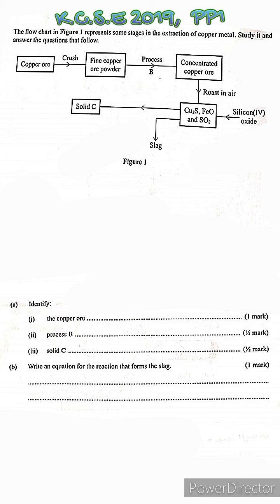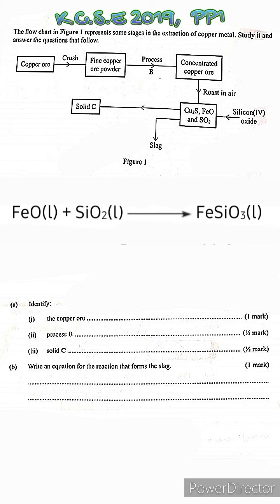Next, what happens to the iron(II) oxide? Iron(II) oxide is separated with the use of silica — silicon dioxide. Iron(II) oxide reacts with silicon dioxide to form iron(II) silicate, which is removed as slag, a waste product.